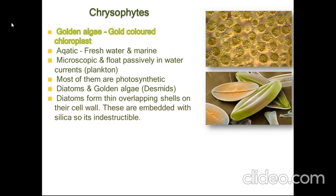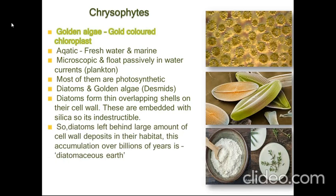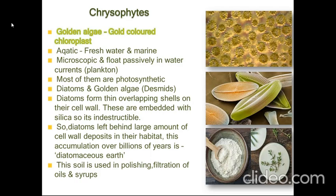Diatoms form thin overlapping shells on their cell wall. These are embedded with silica, so they are indestructible. Diatoms left behind large amounts of cell wall deposits in their habitat. This accumulation over billions of years is known as diatomaceous earth. This soil is used in polishing and filtration of oils and syrups. Diatoms are also known as the chief producers in oceans.